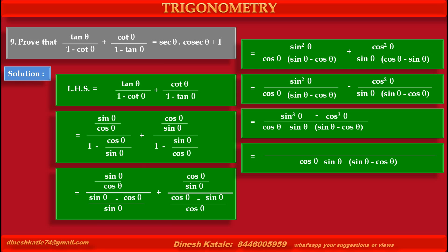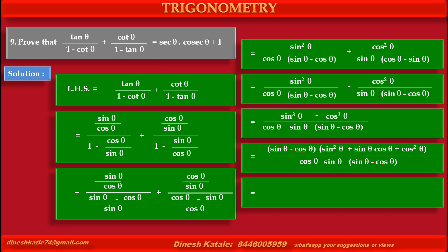The numerator is sin cubed θ minus cos cubed θ. We apply the identity a cubed minus b cubed equals (a minus b)(a squared plus ab plus b squared). So the numerator becomes (sin θ minus cos θ) into (sin squared θ plus sin θ cos θ plus cos squared θ). The common factor (sin θ minus cos θ) from numerator and denominator cancels.